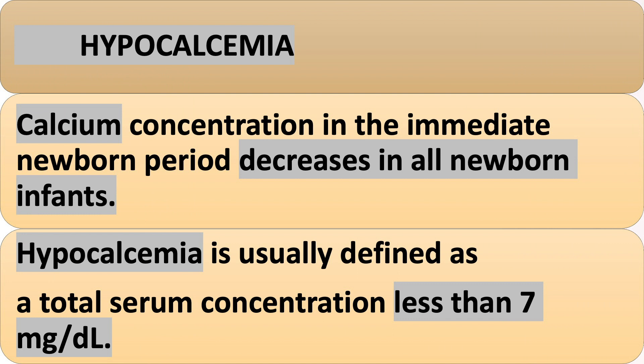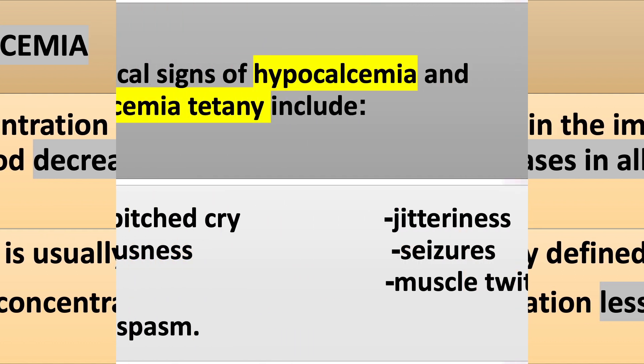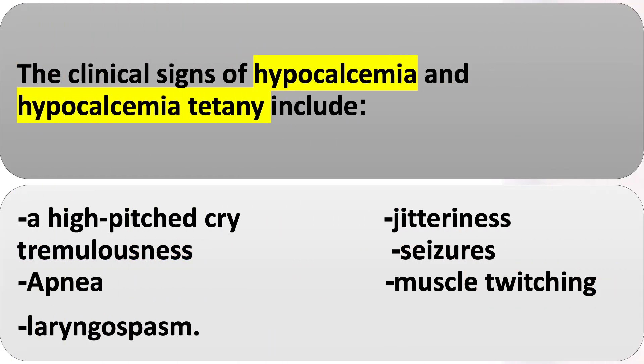Hypocalcemia: Calcium concentration in the immediate newborn period decreases in all newborn infants. Hypocalcemia is usually defined as a total serum concentration less than 7 mg/dL. The clinical signs of hypocalcemia and hypocalcemic tetany include a high-pitched cry, jitteriness and tremulousness, seizures, apnea, and muscle twitching.